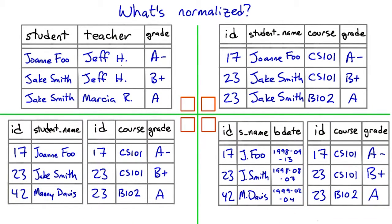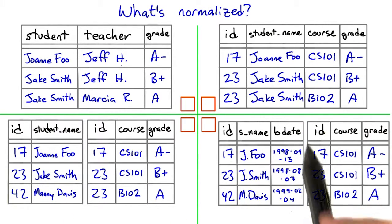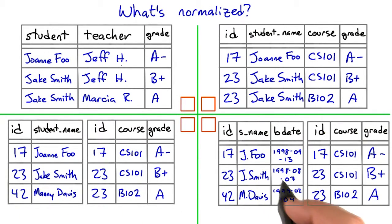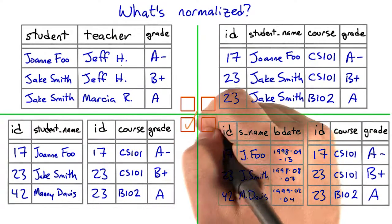In the fourth group, the only difference between this one and that one is that here we're also keeping track of students' birthdates. But a person only has one birthdate, and the birthdate doesn't have anything to do with their grades. So adding this column to this table doesn't make it any less normalized. So both this and that are normalized.